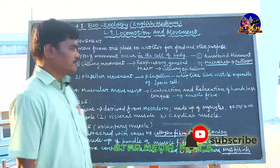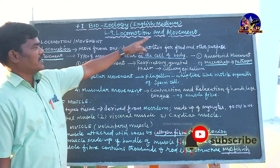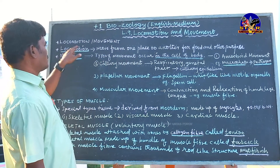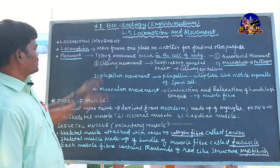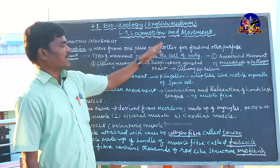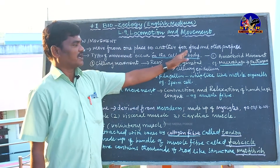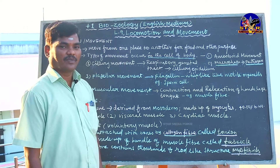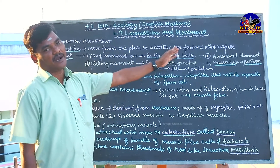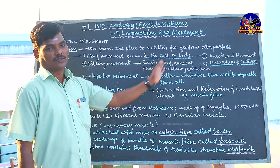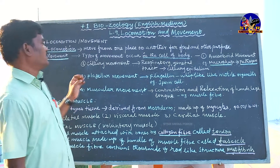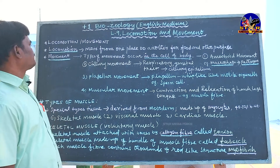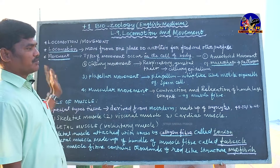First of all, we have to differentiate what is locomotion and what is movement. Locomotion means the movement of an organism from one place to another place for various purposes — for food searching, reproduction, and escaping from enemies. This movement from one place to another is called locomotion.